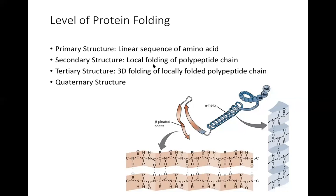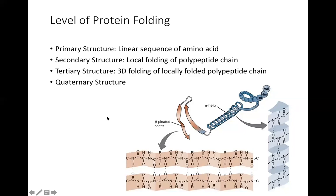When the secondary structure is complete, the locally folded structures — whether alpha helices, beta-pleated sheets, or coils — are further folded in a three-dimensional way in space. This three-dimensional folding is called the tertiary structure. Every polypeptide chain will have at least a tertiary structure.